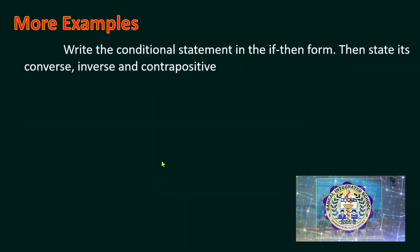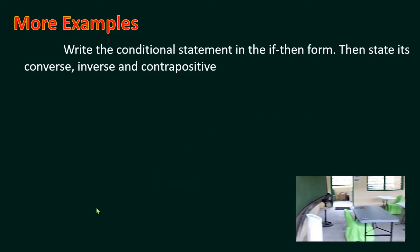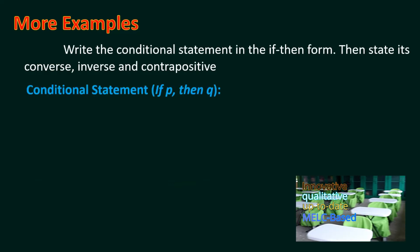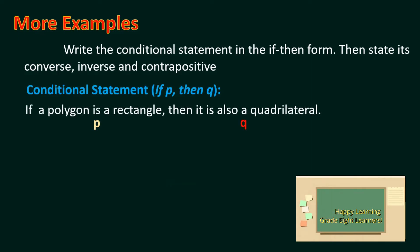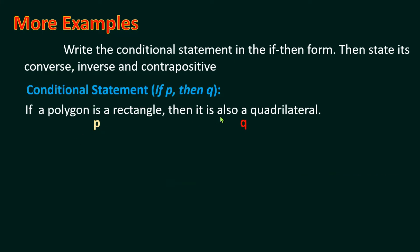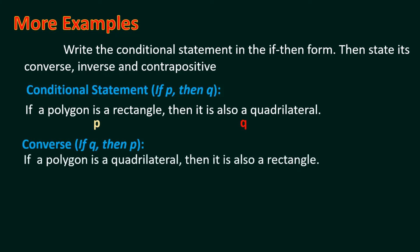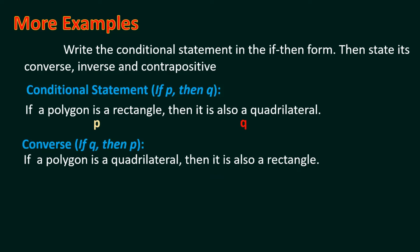For example, write the conditional statement in if-then form, then state its converse, inverse, and contrapositive. Conditional statement: 'If a polygon is a rectangle, then it is also a quadrilateral.' Our hypothesis is 'a polygon is a rectangle,' and our conclusion is 'it is also a quadrilateral.' For the converse: 'If a polygon is a quadrilateral, then it is also a rectangle.' Notice how the hypothesis and conclusion interchange.